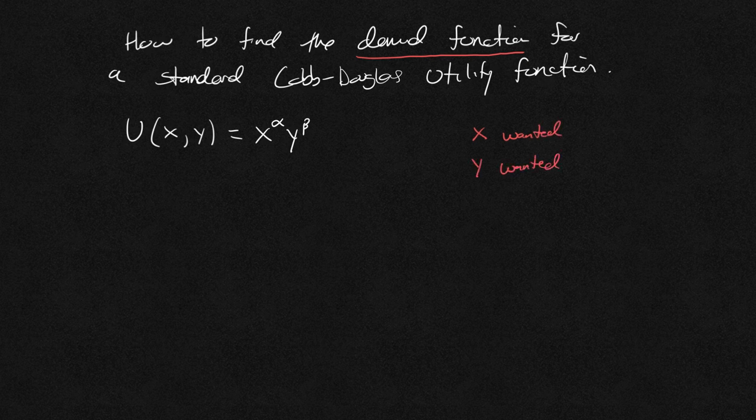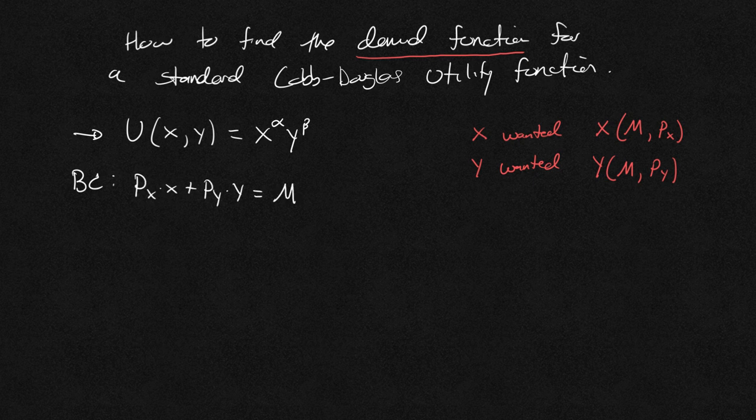We're going to look at both of those. And in fact, for a Cobb-Douglas, x is going to be a function of income m, which we'll define here in a second, and also the price of x. And then y will be m, but price of y. So we have this utility function. We also have a budget constraint, always, which is px times x plus py times y equals my income.